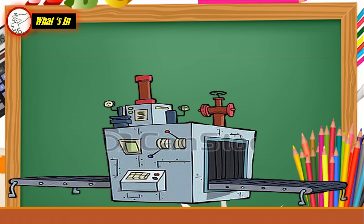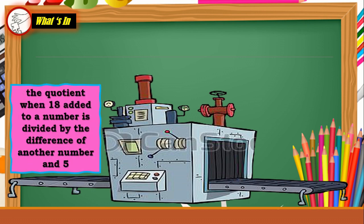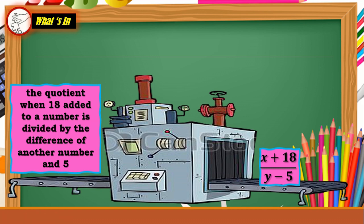Let's try another one: 'The quotient when 18 added to a number is divided by the difference of another number and 5.' We have 2 unknown quantities, and 18 and 5 as our known quantities. We have division for 'quotient,' addition for 'added,' and subtraction for 'difference.' Therefore, the answer is X plus 18 over Y minus 5.